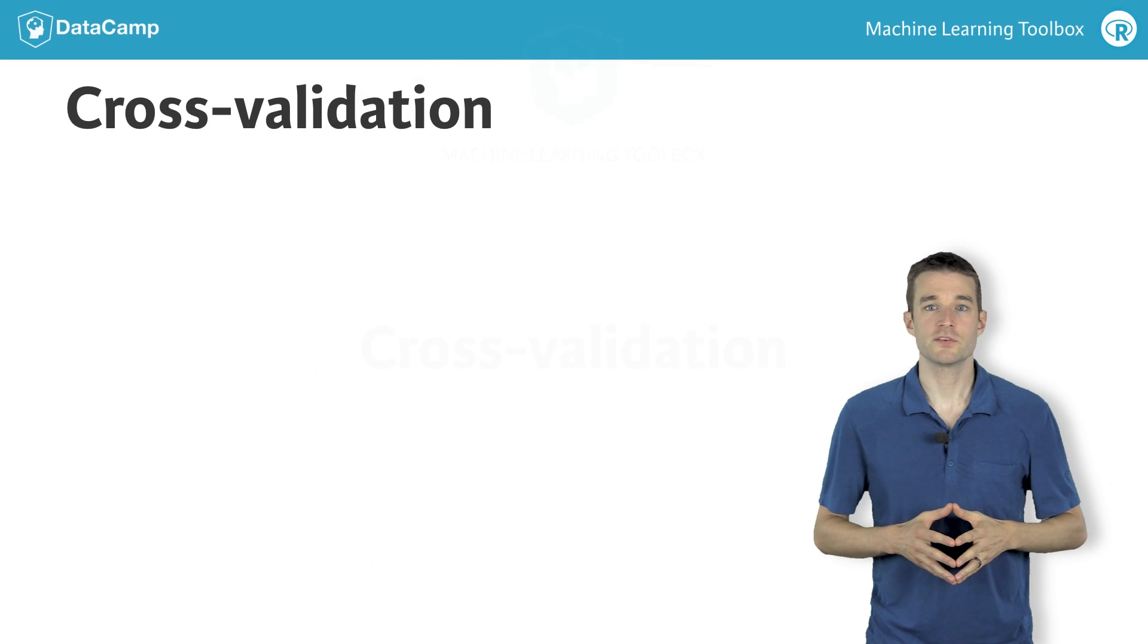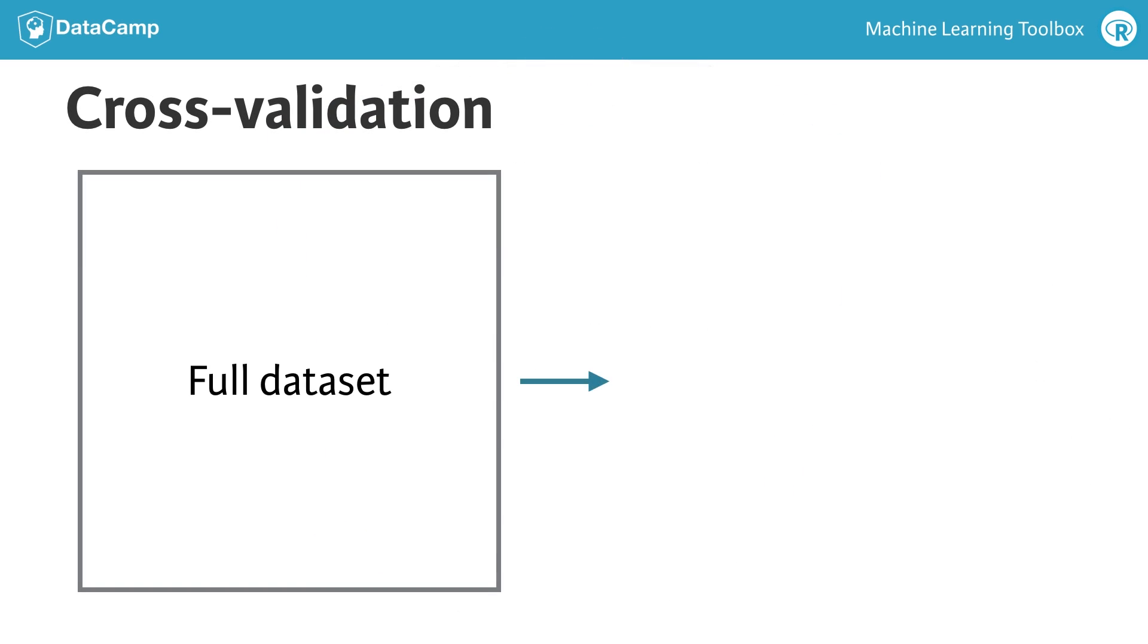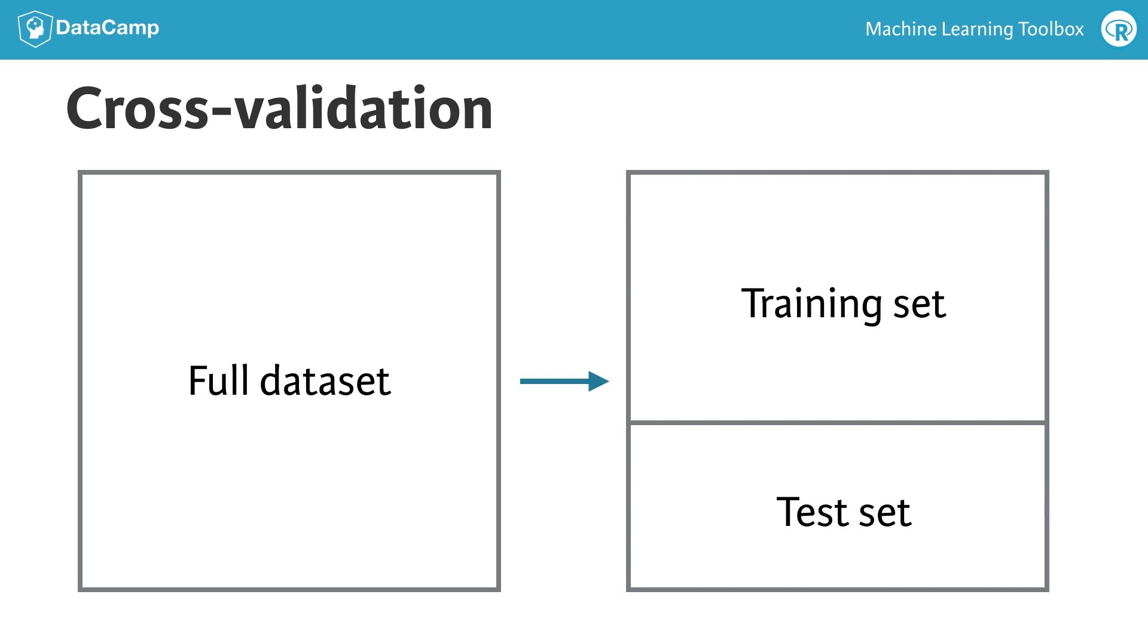In the last video, we manually split our data into a single test set and evaluated out-of-sample error once. However, this process is a little fragile. The presence or absence of a single outlier can vastly change our out-of-sample RMSE.